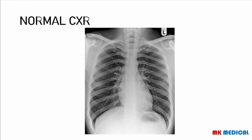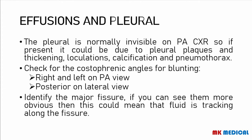Then we went on to look at the cardiac shadow, where we looked at enlargement of different chambers of the heart, and we looked at the mediastinum — though we shall go into details of those in individual separate lectures. We then looked at the diaphragm, examining the anatomy of the right and left diaphragm, and which diaphragm is higher than the other. In this review lecture video, we shall continue and look at effusions and pleura. So we're now at E — we've covered airway, bones, cardiac shadow, and the diaphragm. Now we're coming to effusions and pleura.